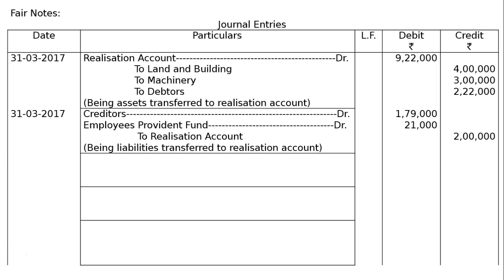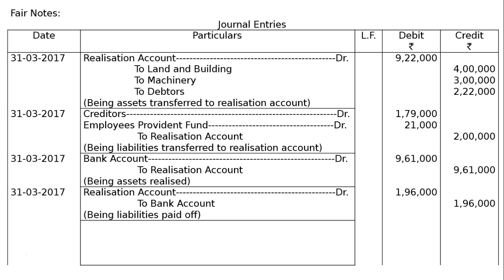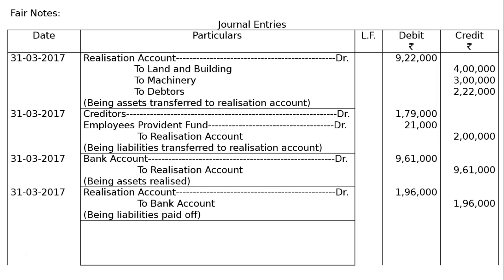Third entry: realization of assets — bank account debited to realization account Rs. 9,61,000. Being assets realized. Fourth entry: payment of liabilities — realization account debited to bank account Rs. 1,96,000. Being liabilities paid off — creditors and employees provident fund. Fifth entry: transfer of profit — realization account debited to Achal's capital account Rs. 16,125 and to Vichal's capital account Rs. 26,875, total Rs. 43,000.